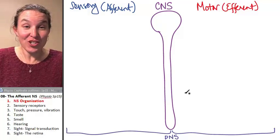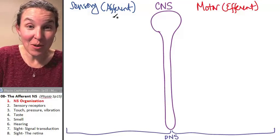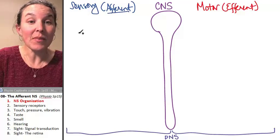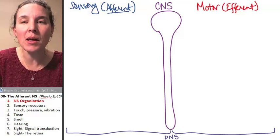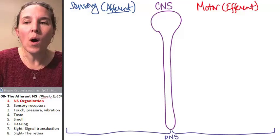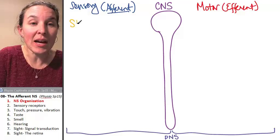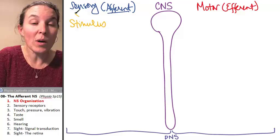We know that this is our task today. We're going to talk about the afferent nervous system. And we know that the whole thing has to start with some kind of stimulus, right?